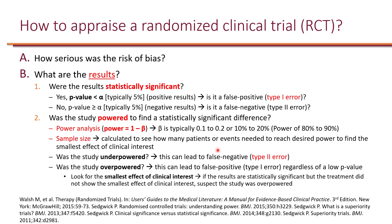For example, how many mortalities need to occur in the study to find a difference between the two groups. If a study says 2,000 patients are needed for 80% power but only 1,000 were included, that study was underpowered. If the results are not statistically significant and the study was underpowered, you can conclude this is due to a false negative, and they need to follow up with studies with a larger sample size.